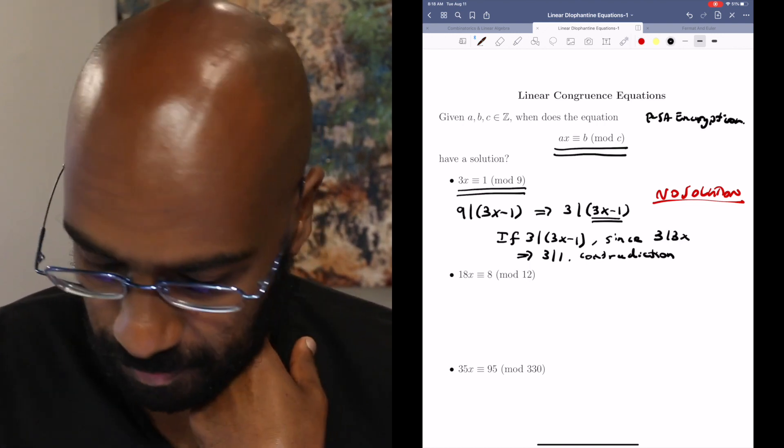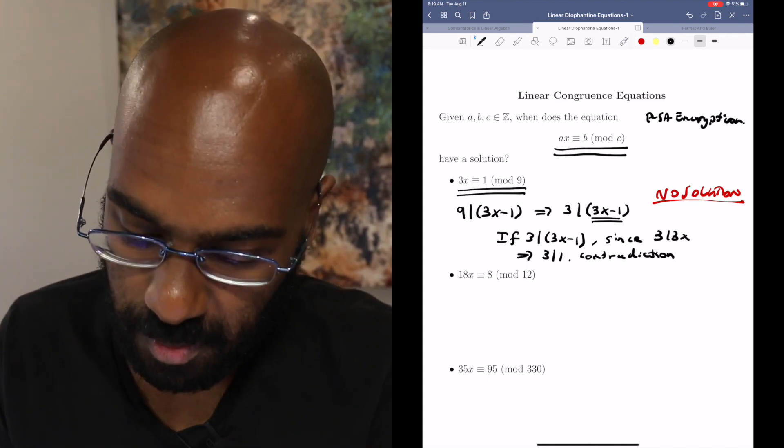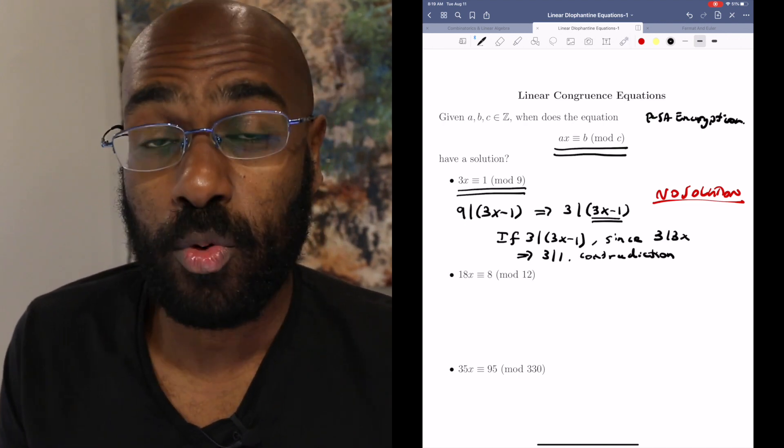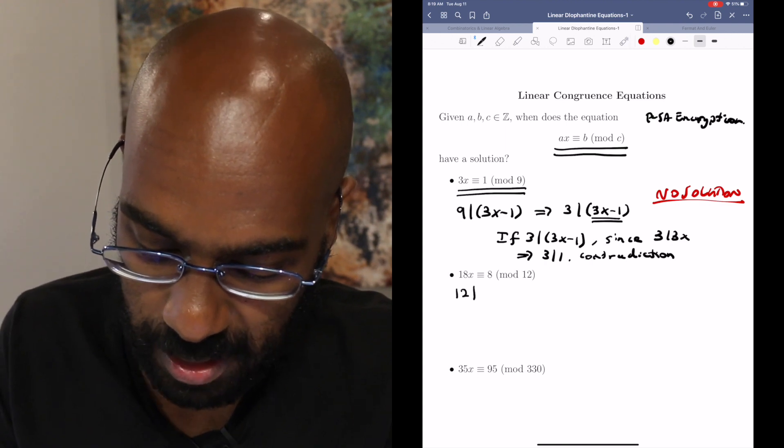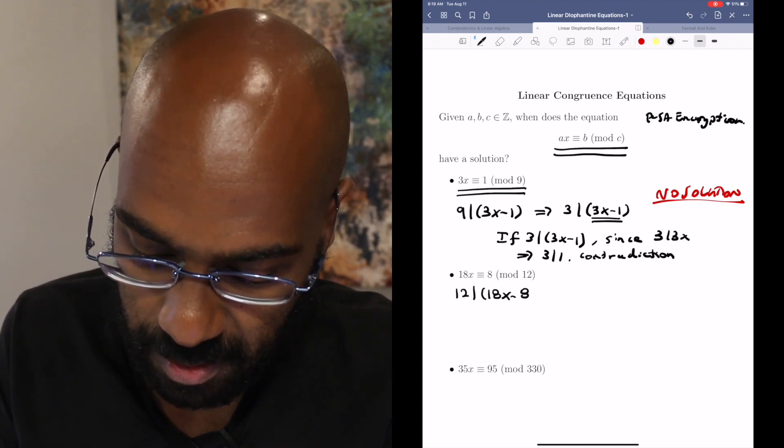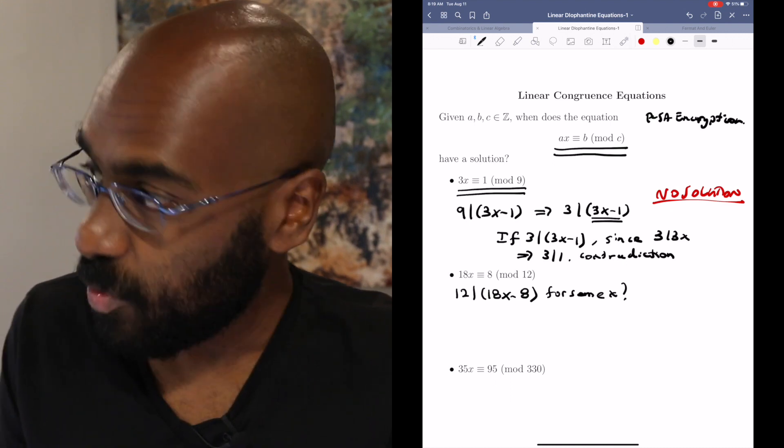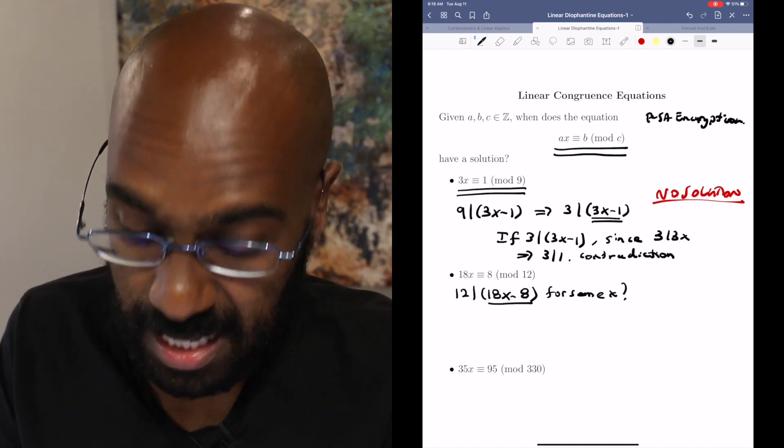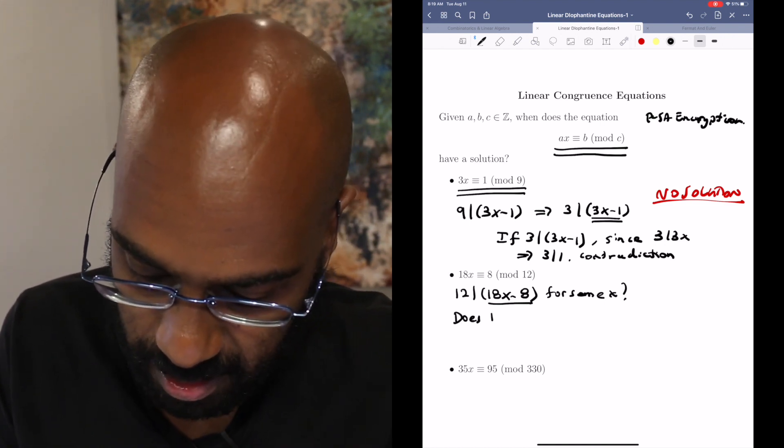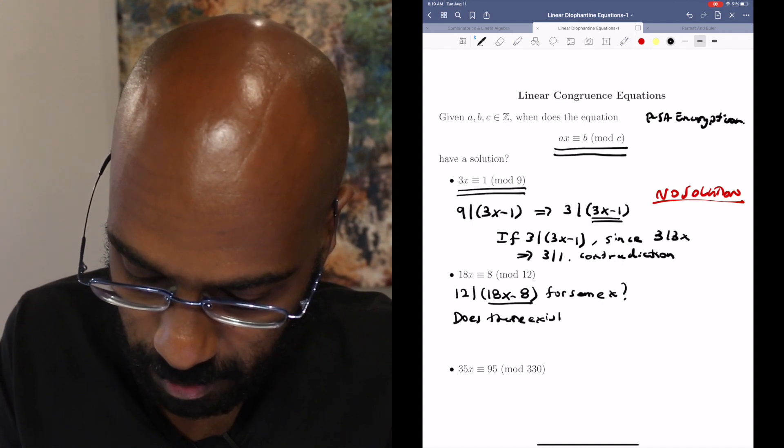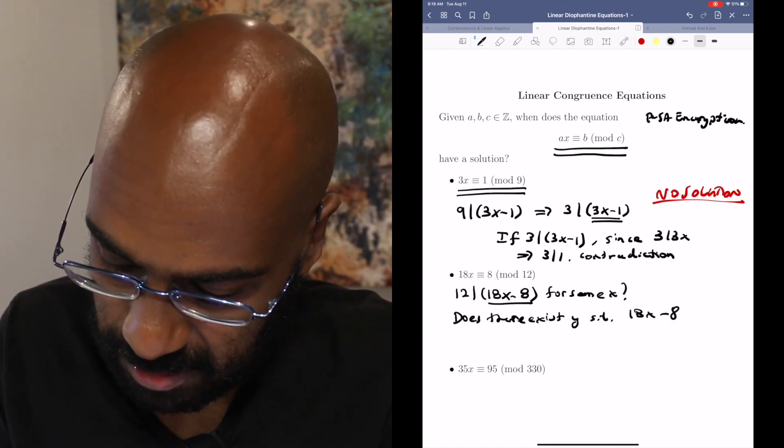Let's look at another example to get some insight. 18x is congruent to 8 mod 12. Now we could go about doing the same thing that we did before. But another thing we could do is reword this question, thinking about what we thought about before. So this is asking whether or not 12 divides 18x minus 8 for some x. So another way to word that is saying that 18x minus 8 is a multiple of 12.